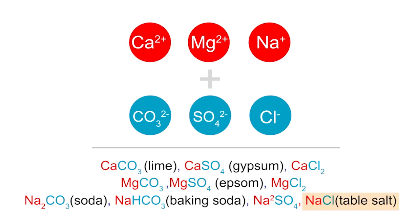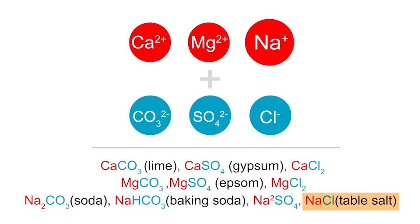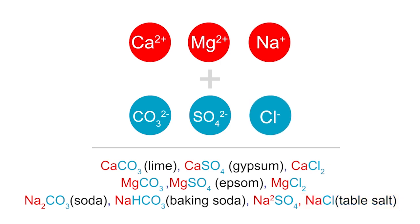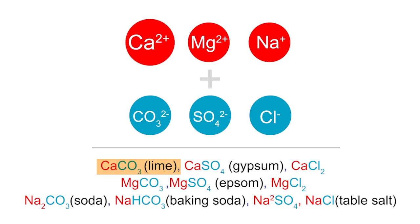NaCl, which is table salt, is the positively charged sodium ion attaching to the negatively charged chloride ion. And calcium carbonate, which is also known as lime, is the positively charged calcium ion attaching to the negatively charged carbonate ion.